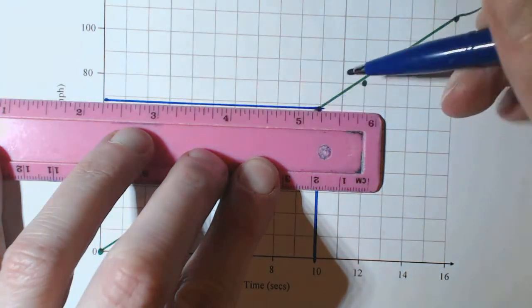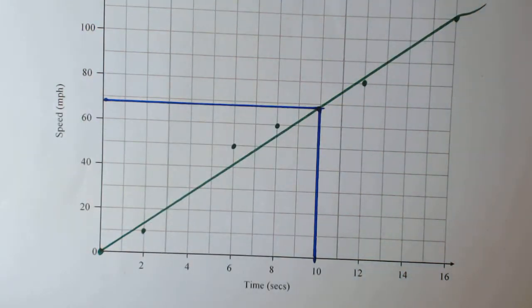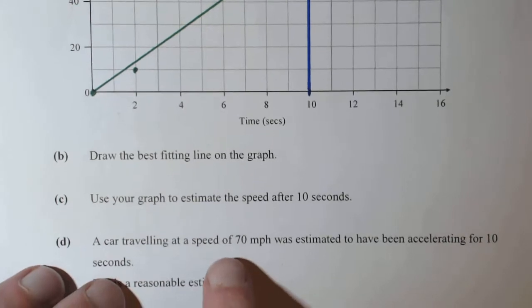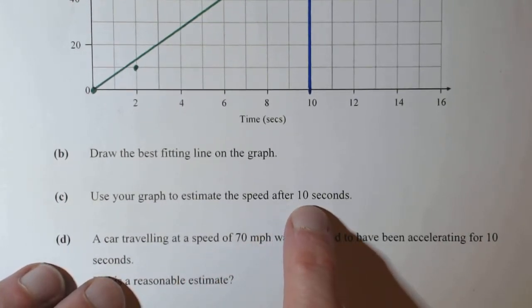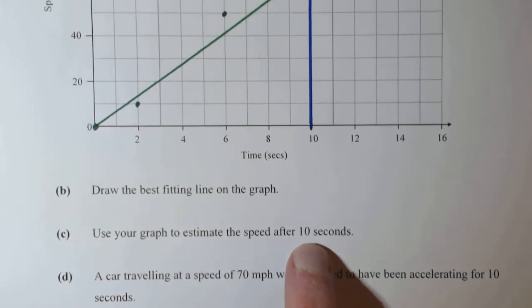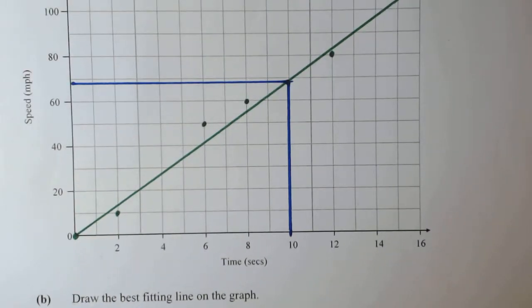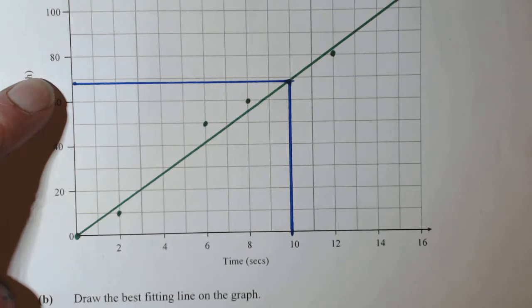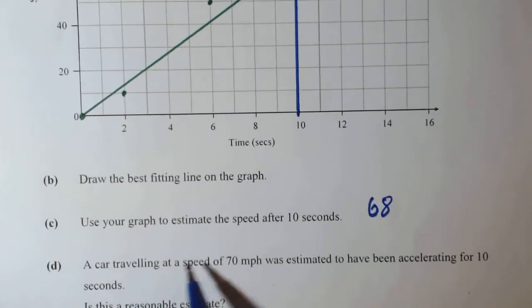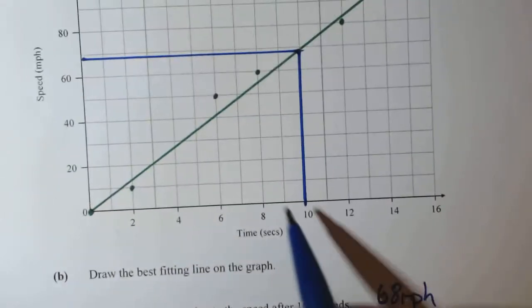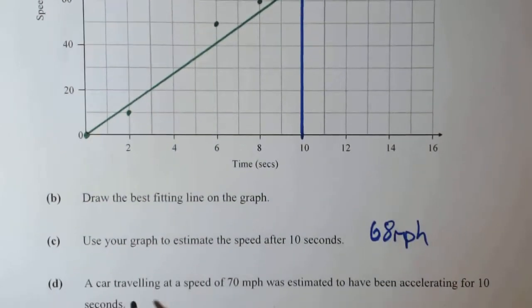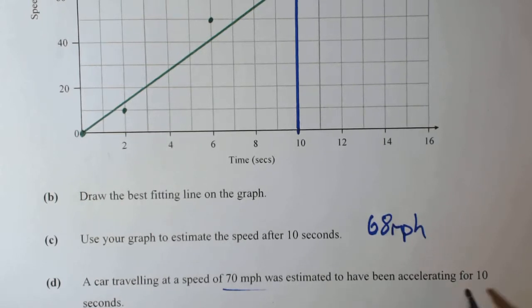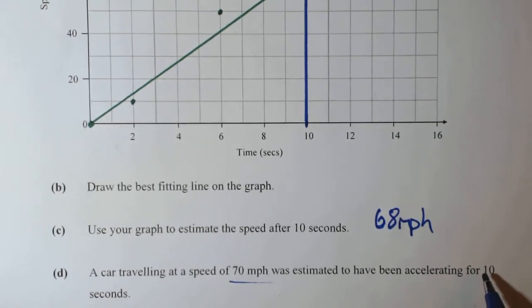What you'll find is, you're saying use your graph, 10 seconds, so you're estimating it to be 10 seconds. So I'm getting around about 68, so that's around about 68 miles per hour. So it's just under 70. The car traveling at a speed of 70 was estimated to have been accelerating for 10 seconds, so that's reasonable.